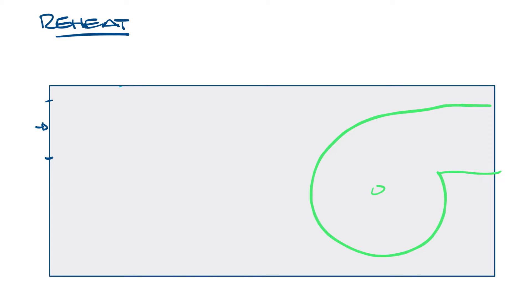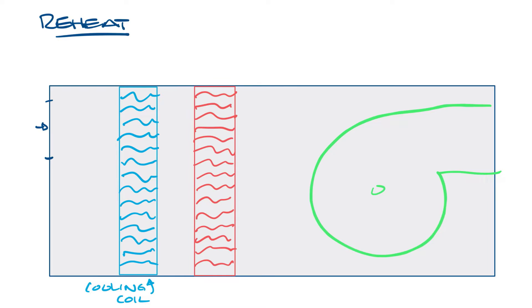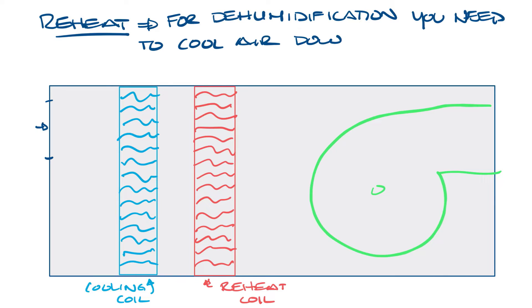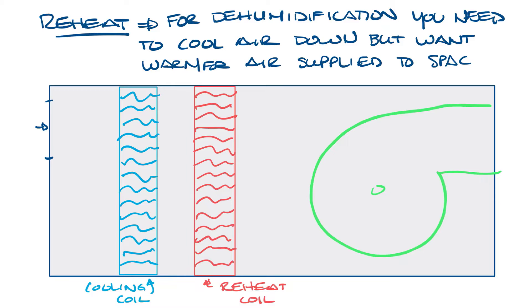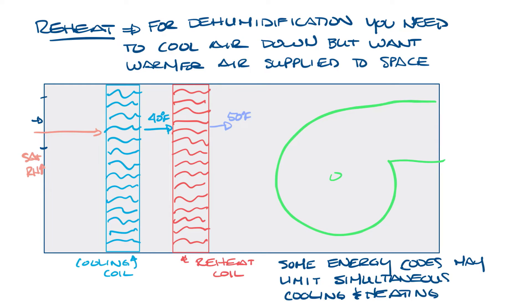Now let's move this over and look at reheat. Draw the casing and put the fan here again. If you put the coil in the reheat position after the cooling coil, it serves a different function. You would reheat if, for dehumidification, you have to cool the air down to a temperature that is too cold to provide to the space. So if you live somewhere really humid and say you have to cool the air down to 40 degrees to dry it out, you would have to use your reheat coil to warm it back up to 50 degrees so you could supply it to the space. It's important to know that some energy codes have limitations on simultaneous cooling and heating, so you may have to meet certain conditions before you can use the reheat.